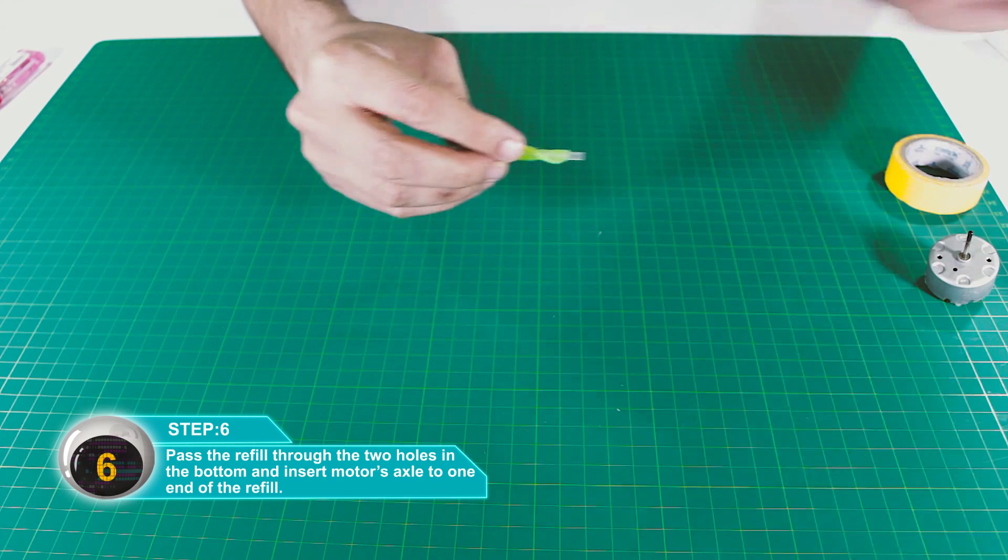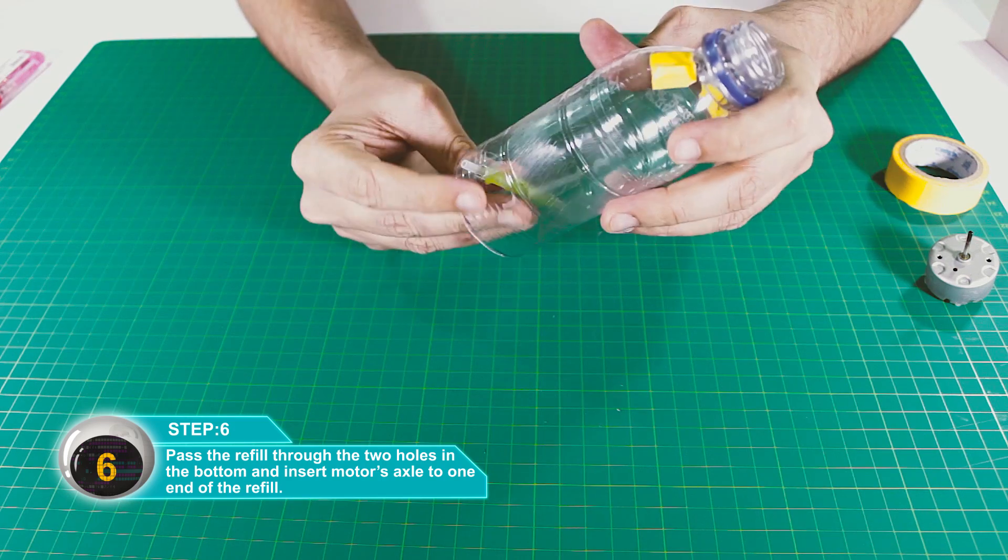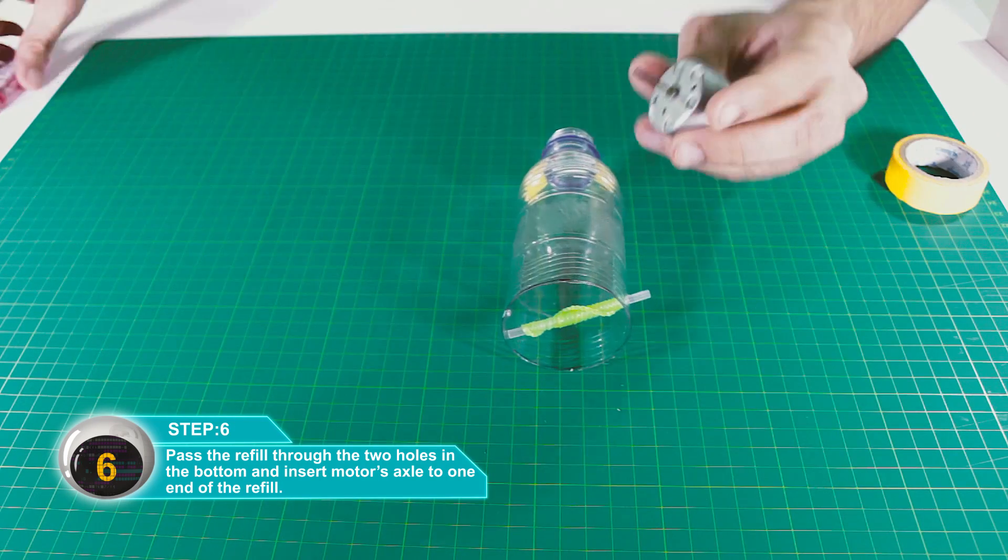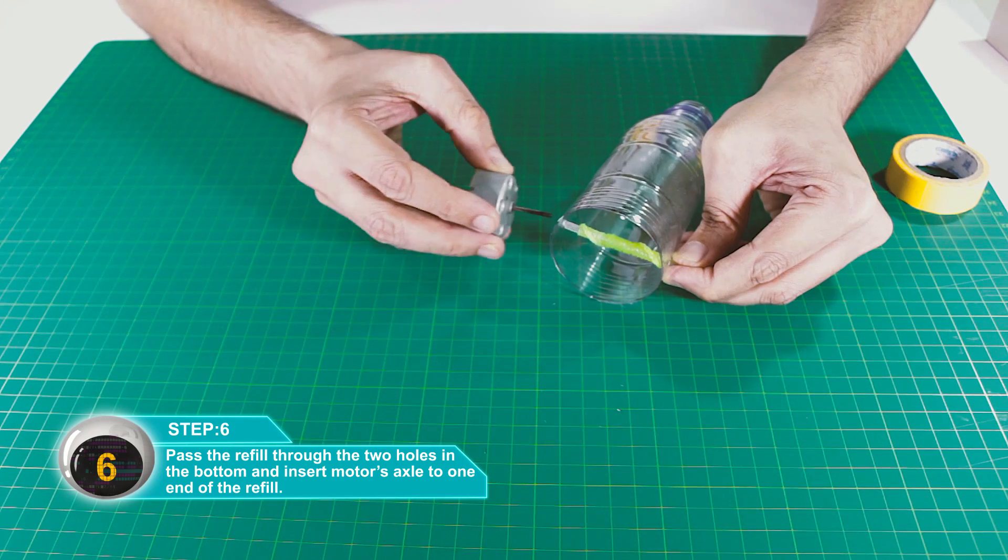Now pass the refill through both bottom holes, and insert the motor's axle into the refill.